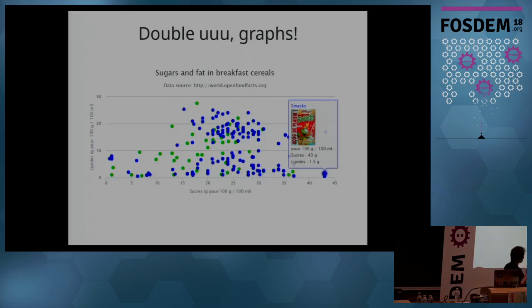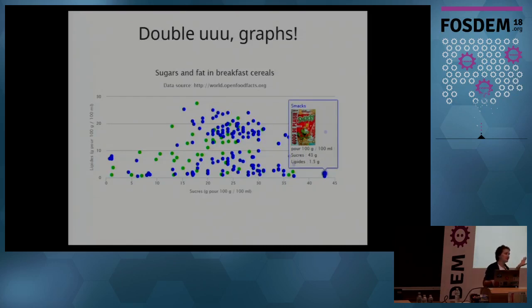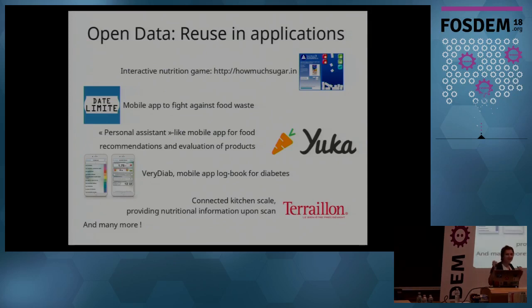And what's better than statistics? Graphs! You can go on the Open Food Facts website, click a button, and create graphs. This graph shows fat and sugar for breakfast cereals. You can see where products place — most breakfast cereals are between 20 and 30 grams of sugar per 100 grams, with many concentrated in that area. You can do this kind of exploration in this big database. You can also zoom the graph, which is useful when there are thousands of dots. The database is open — it uses an open database license — so you can reuse it however you want and do interesting things with it.